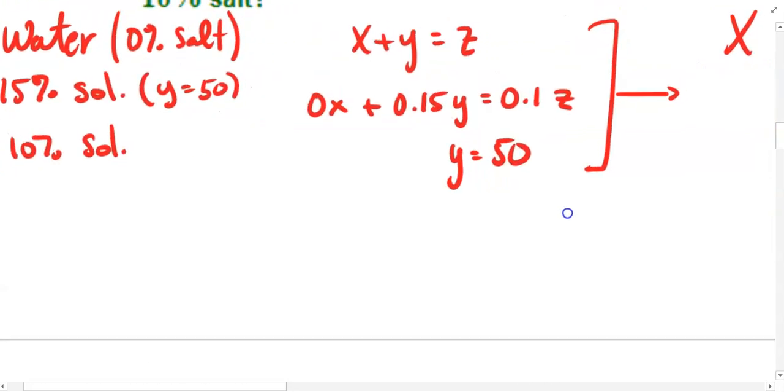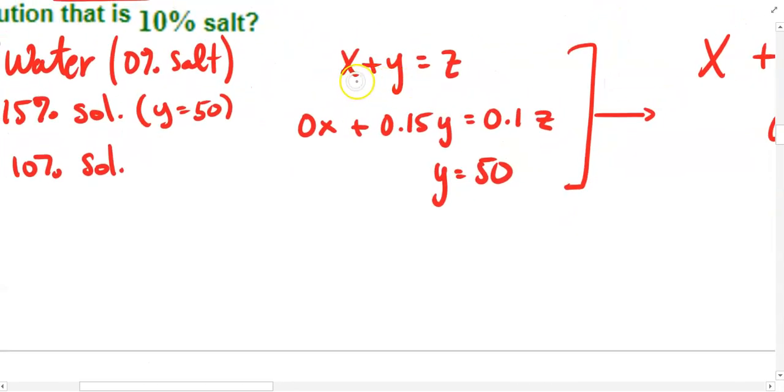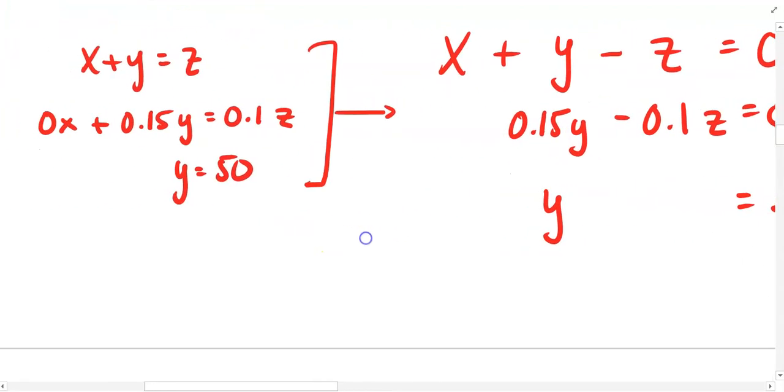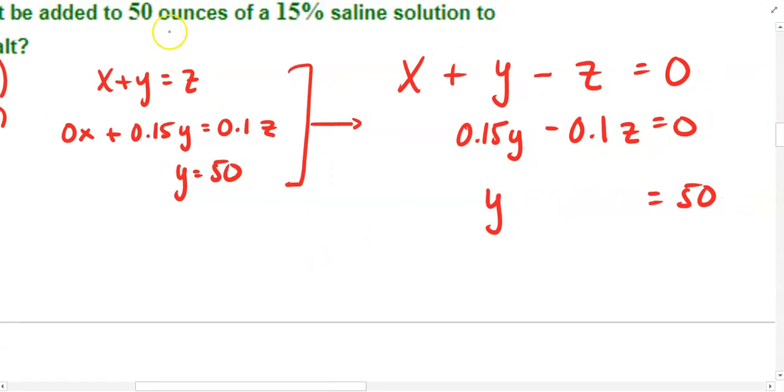In a similar setup to the last problem, x plus y equals z. In this case, 0x plus 0.15y equals 0.1z. And then finally, y equals 50. Rather than use substitution to solve this problem here, I went ahead and rearranged the equations a little bit. In order to use a system of equations, we need all variables on one side and solutions on the other. So, I subtracted z to the left and I ended up with this first equation.